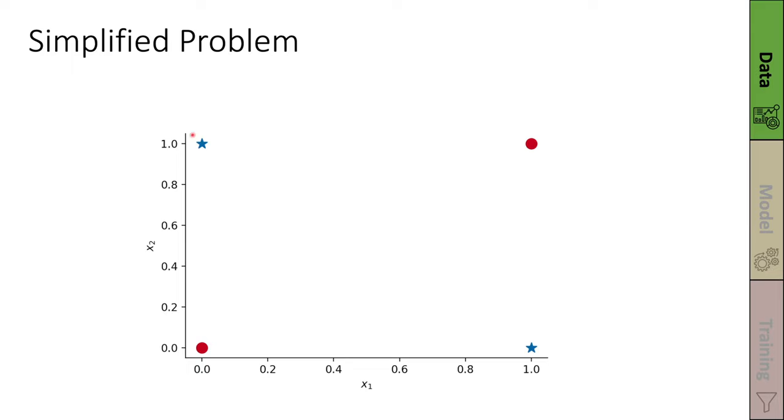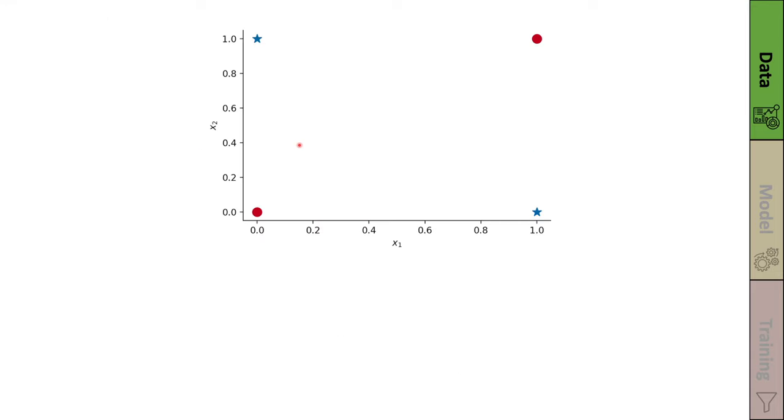Instead of looking at these clusters of points, we just look at individual points that are located in the corners. So the upper corner here would be a value of 1 for x2 and a value of 0 for x1. So this is now what we are dealing with as a representation for the clusters of points that we had before. So this is our simplified problem. And with that, we can take another look at what linear classifiers can do for us in this case.